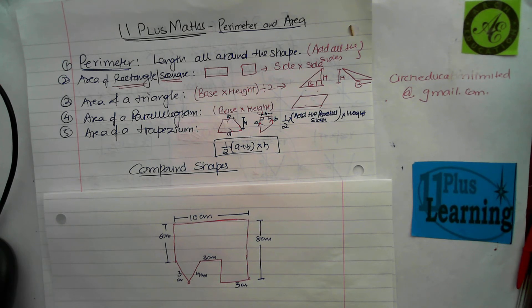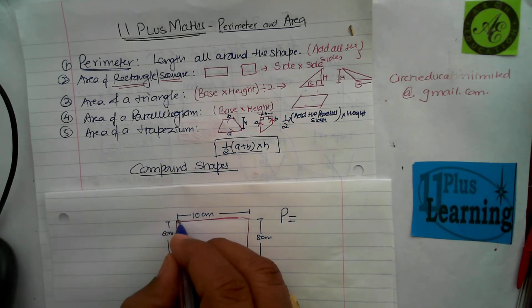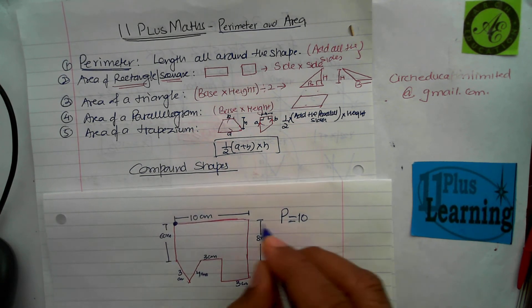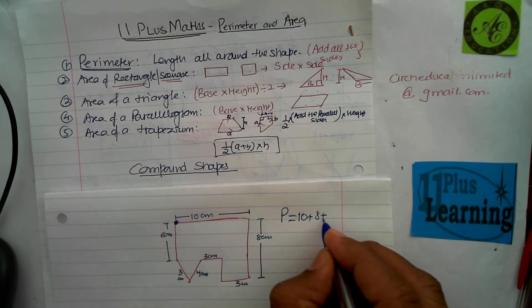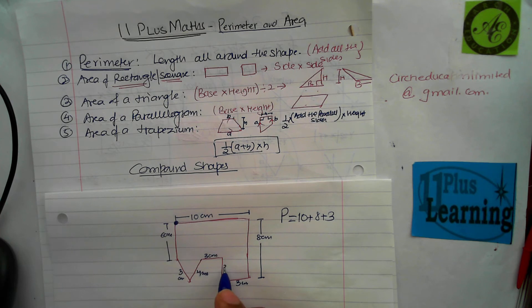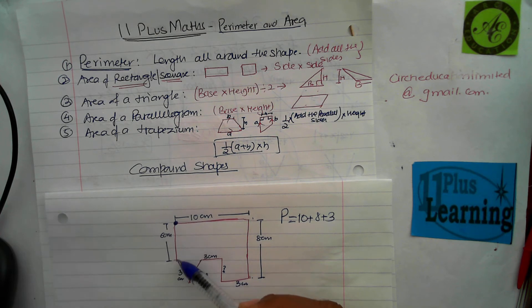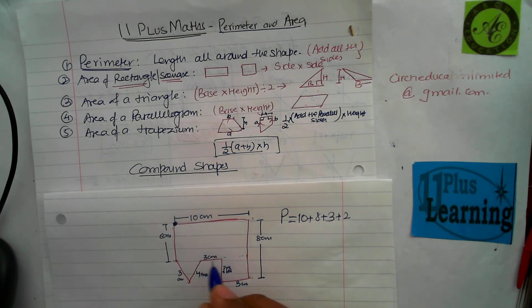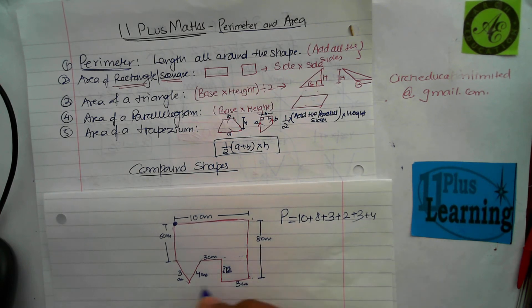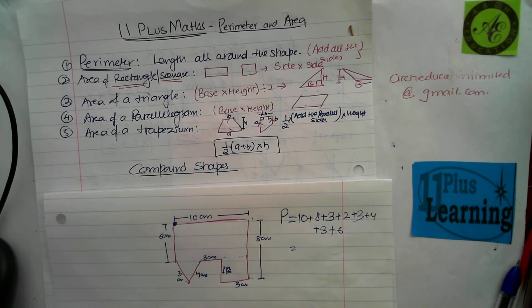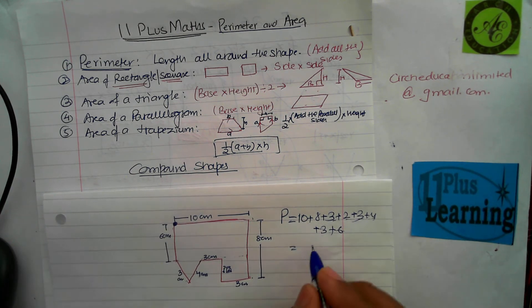The second shape is slightly harder. Starting from the top-right going right: 10, then 8, then 3. I don't know this side — the total vertical here is 8 and this part is 6, so the remaining is 2. Continuing: plus 2, plus 3, then 4, then 3, then 6. Adding them all together gives a perimeter of 39 centimeters.